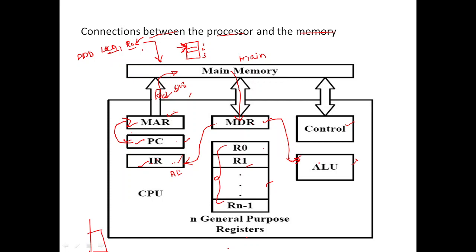The address of the location where the result is to be stored is placed in the MAR, since the MAR holds addresses only. After storing the result at the final address, the contents of the PC are incremented. Previously it was pointing to address 1000; now that instruction is done, the PC is loaded with the next instruction's address.